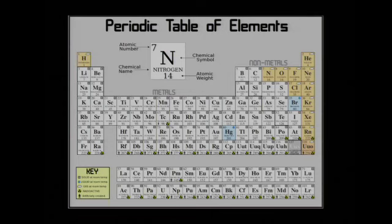So let's start out with the periodic table. I bet most of you have seen this — maybe it's been a couple of years. What this is, is a table of all of the known chemical elements. They are lined up so that all the columns are things that have very similar chemistry. As we go down, they get heavier.